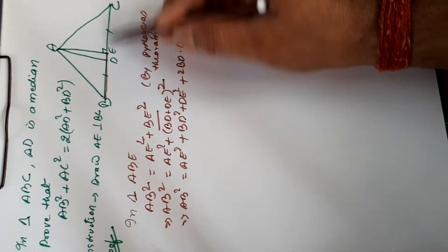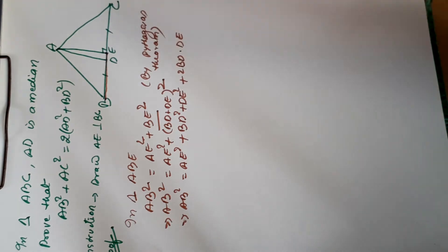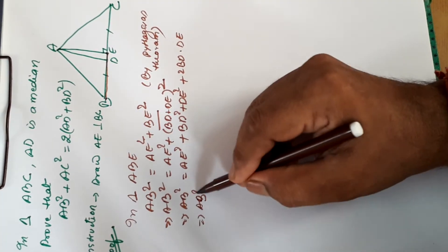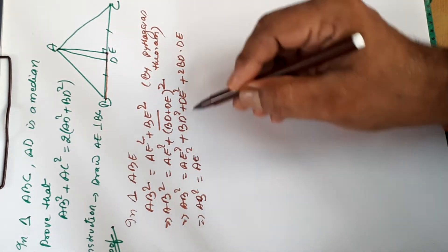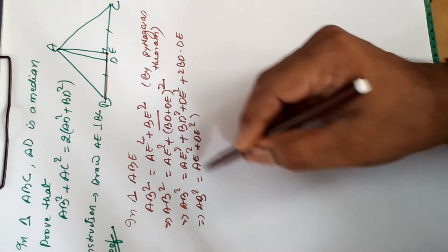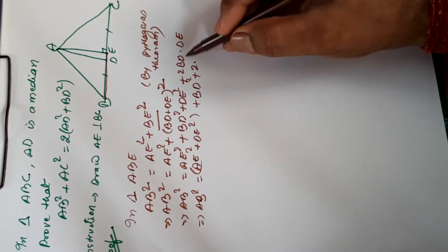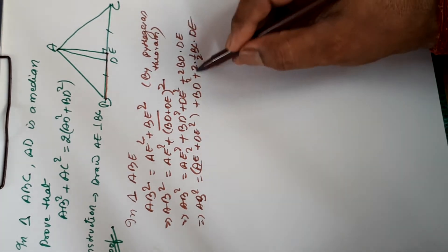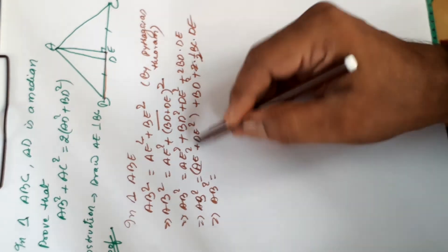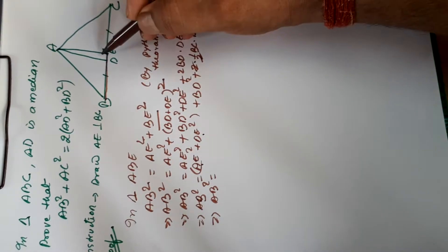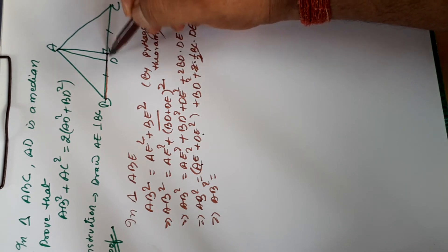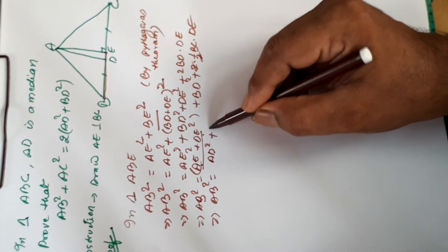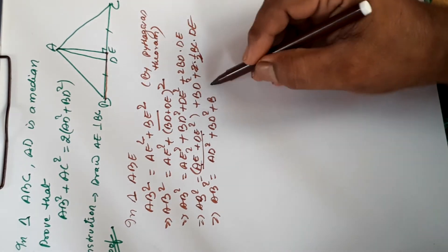BD and DC are both equal to half BC, since AD is a median. In place of BD we write half BC. So AB square equals AE square plus DE square. Now AE square plus DE square equals AD square by Pythagoras theorem in right triangle ADE. Therefore AB square is equal to AD square plus BD square plus BC into DE. Let this be equation 1.